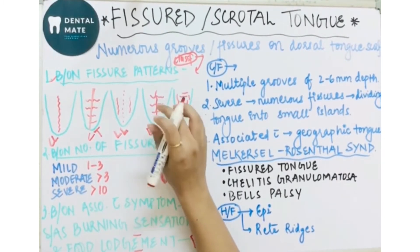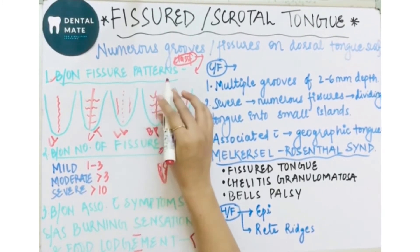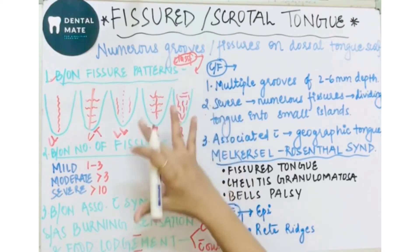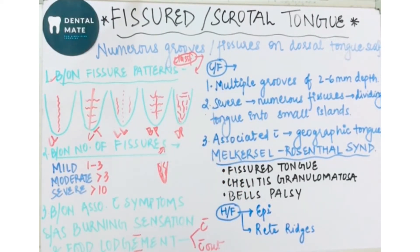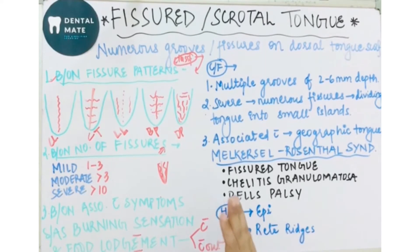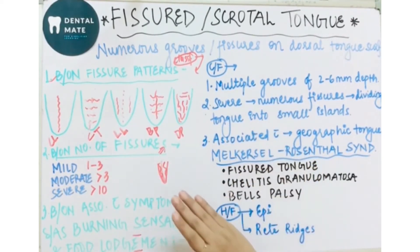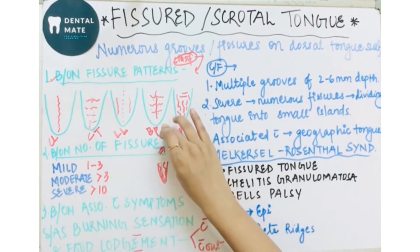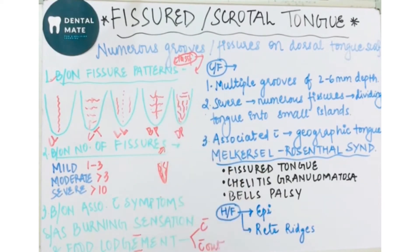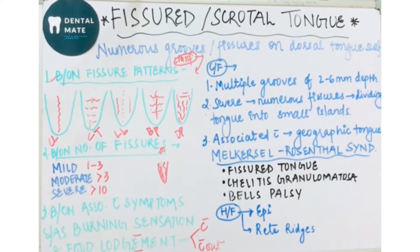In the branching pattern, transverse fissures extend from the central fissure. Then there is the diffuse pattern, where fissures are present everywhere in a diffuse arrangement. To summarize: based on fissure pattern, fissured tongue can be of five types — central longitudinal (vertical fissure along midline), central transverse (horizontal fissures crossing midline), lateral longitudinal (fissures lateral to midline), branching pattern (transverse fissures extending from central fissure), and diffuse pattern (diffuse arrangement of fissures).